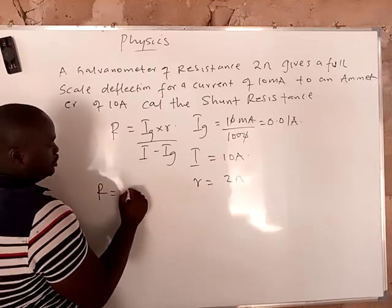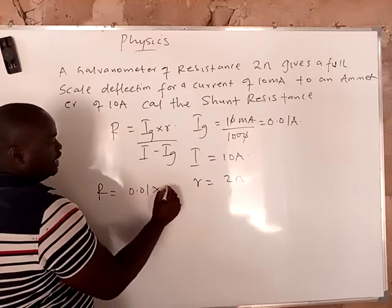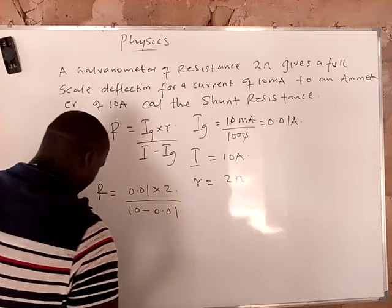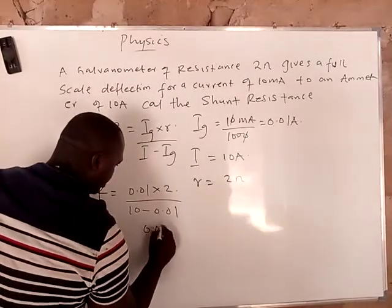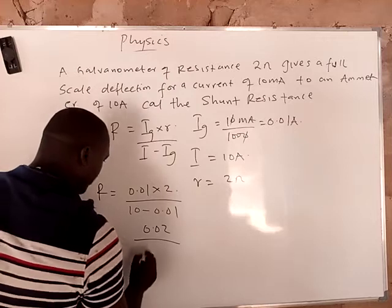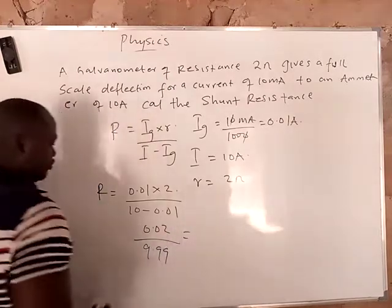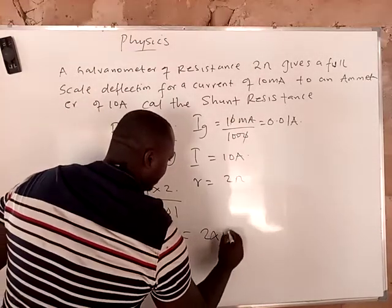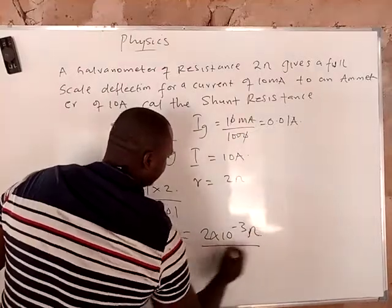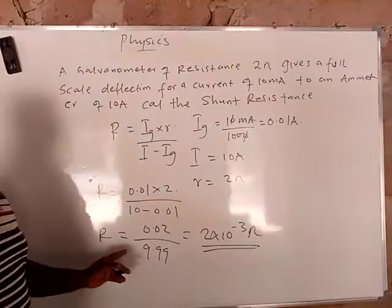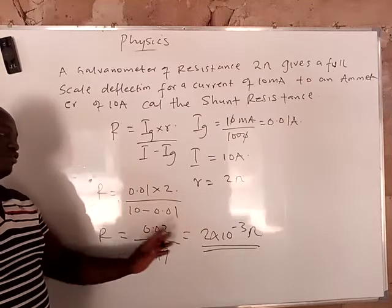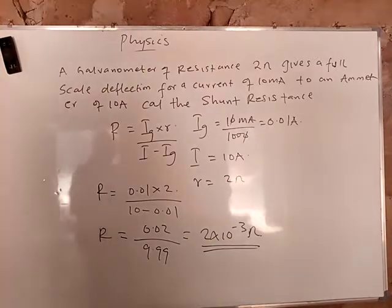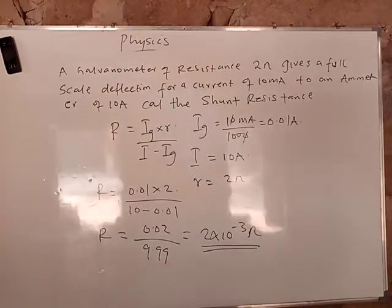Inserting into the formula: R equals 0.01 times 2, all over 10 minus 0.01, which gives 0.02 over 9.99. Punching this into the calculator gives approximately 2 times 10 to the power of negative 3 ohms. That is the shunt resistance — the low value resistance connected in parallel to convert a galvanometer to an ammeter.